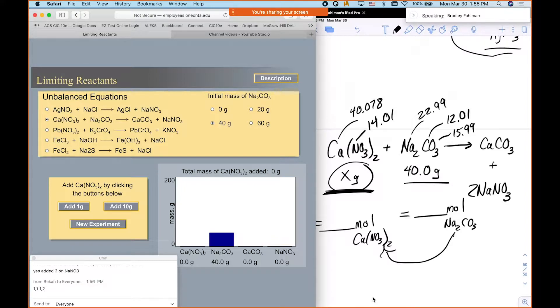Okay, so if we have a molar mass for sodium carbonate of 105.96, if you do that, 40 divided by that is 0.378 moles.